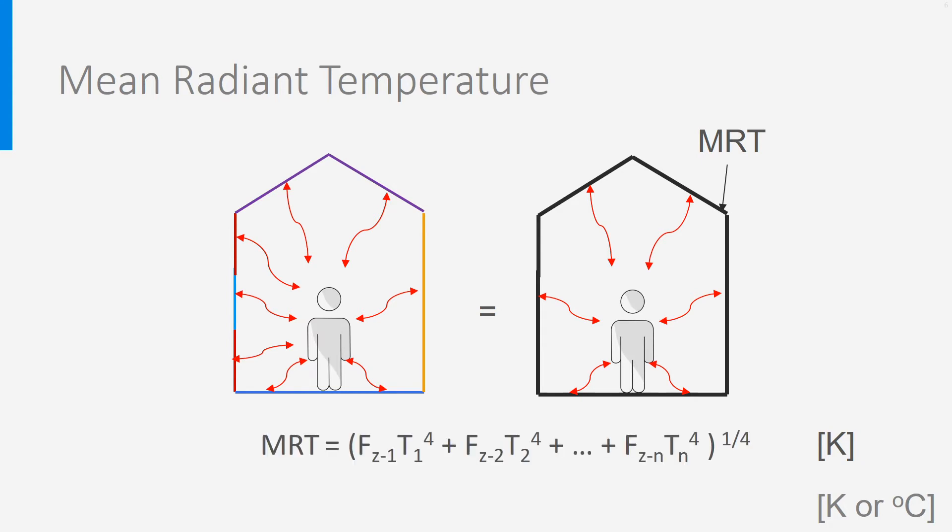The MRT is defined as the square root of the square root of the weighted sum of all surface temperatures to the power of 4. The weights in the sum are the view factors. Please be aware that in the formula all temperatures should be in Kelvin — making the calculation in degrees Celsius will lead to wrong estimates because of the power of 4. In cases where all surface temperatures are very close to each other, MRT can be simplified to the simple weighted sum of all temperatures.